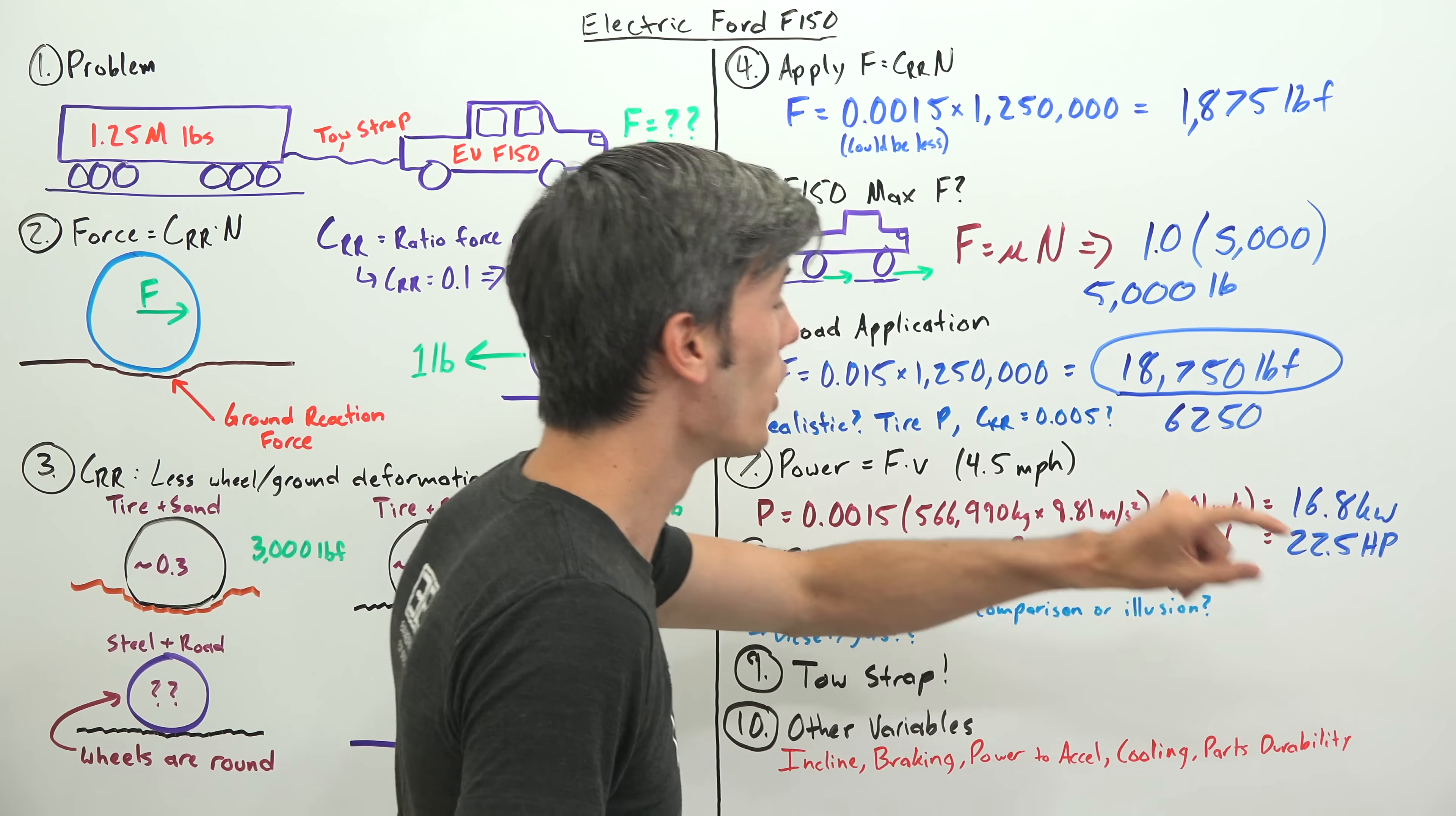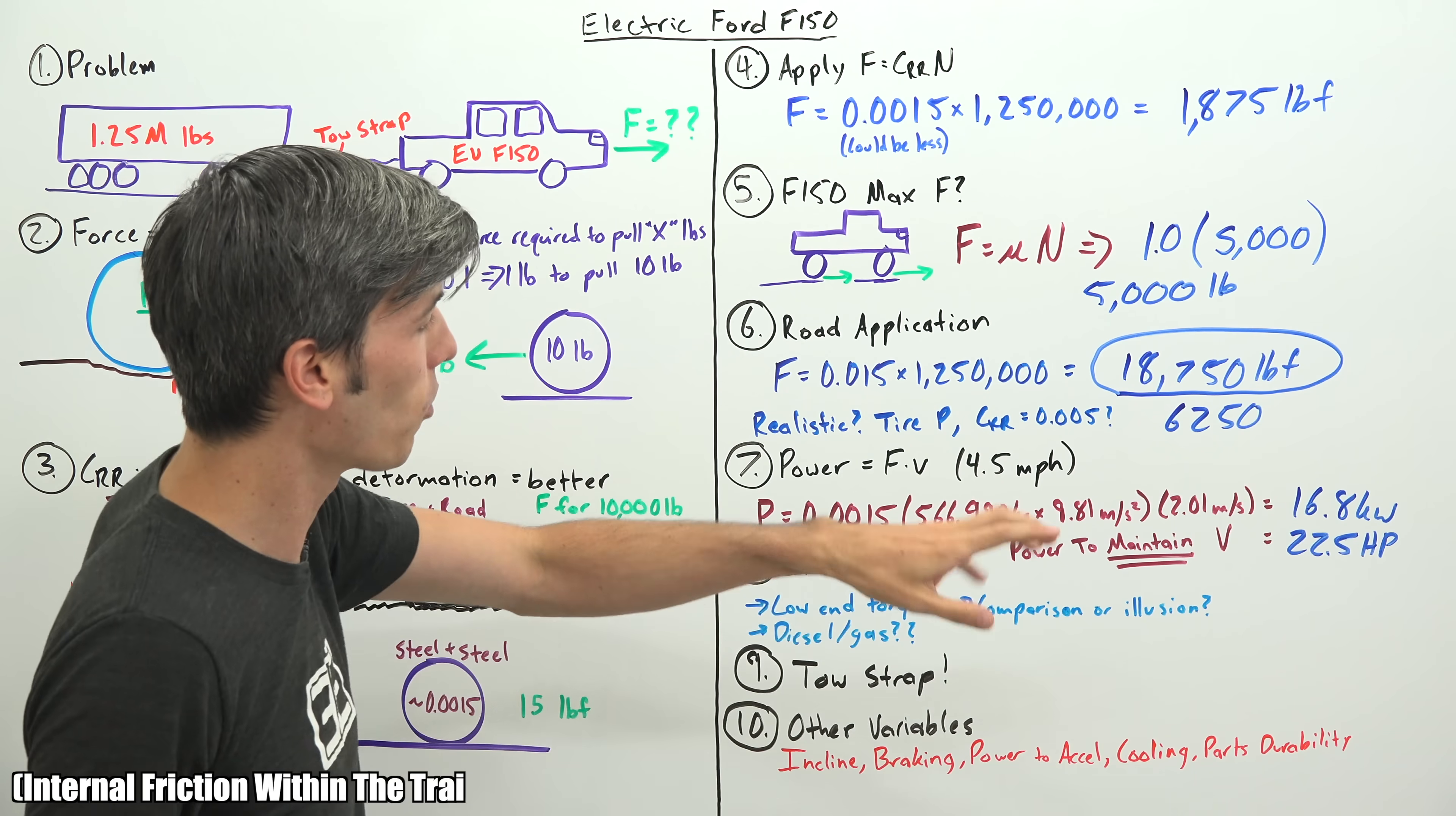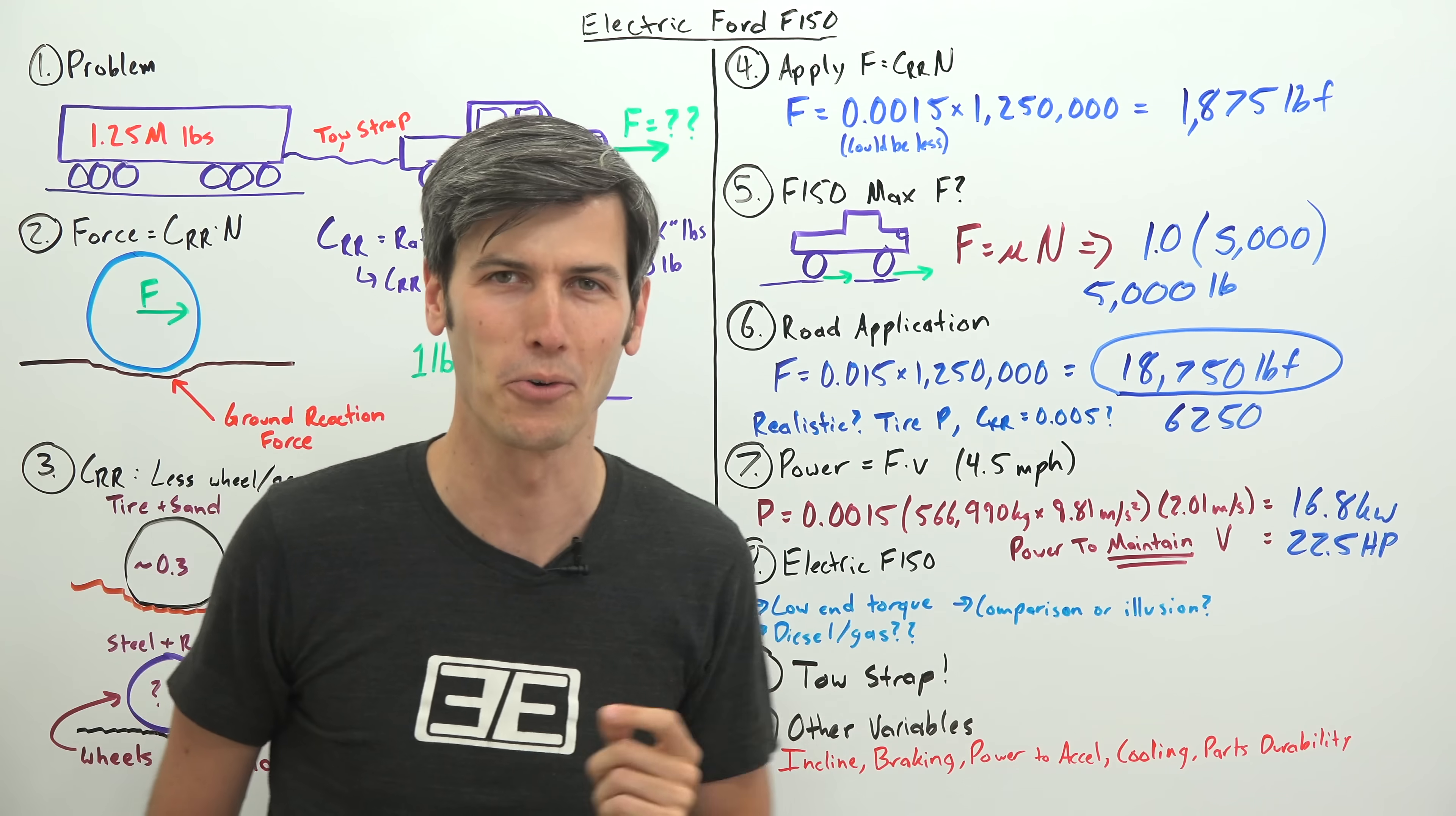So if we do that math, multiply the force by the velocity, we get 16.8 kilowatts or 22.5 horsepower. That is all that is needed to maintain a speed of 4.5 miles per hour. Now to get up to that speed is going to take more power. It takes a lot of power to accelerate, but to maintain that speed of 4.5 miles per hour, all that Ford F-150 has to put down is 22.5 horsepower to keep that thing moving. That is pretty cool.